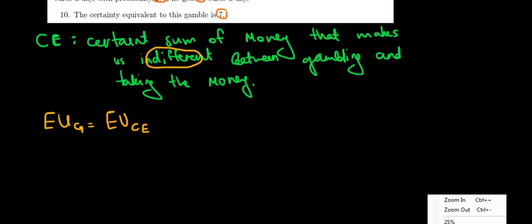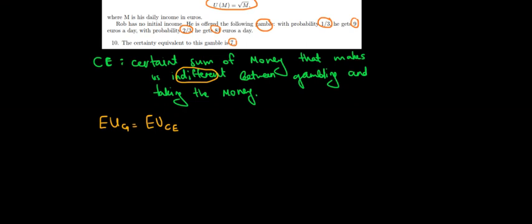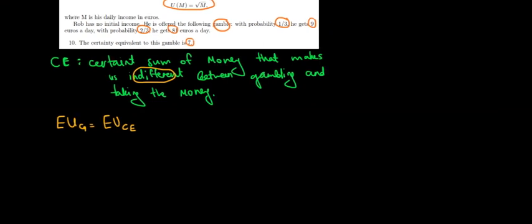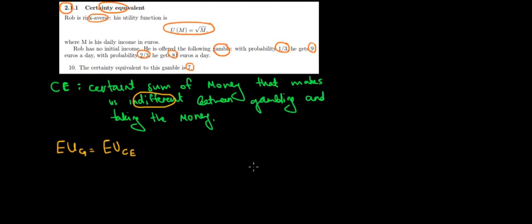So let's do it. Let's zoom out to get some more space. Like that. Now, what would be the expected utility from the gamble? Because that's the first thing we have to know. That's the harder part.